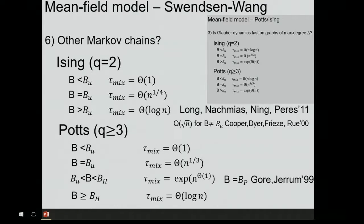Our results are that for the Potts model there are actually several critical points, not just one. There is some critical point up to which the chain is fast. At that critical point it slows down to polynomial. Then it is exponential for a while. And there is another threshold beyond which the chain is fast again.